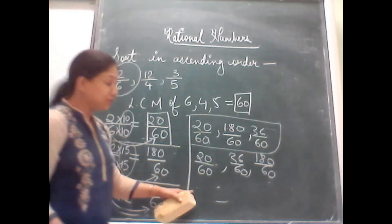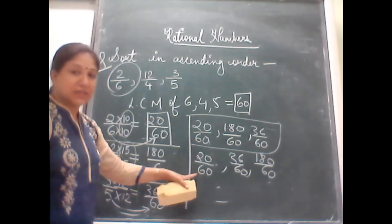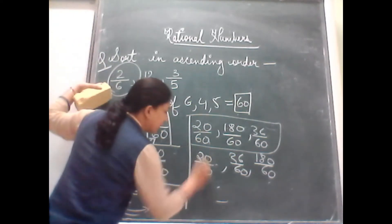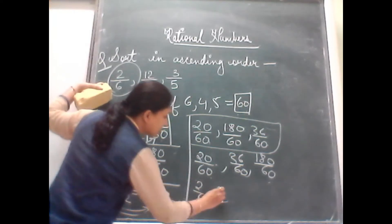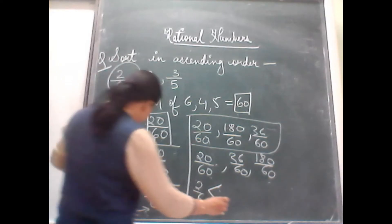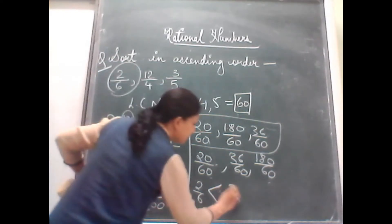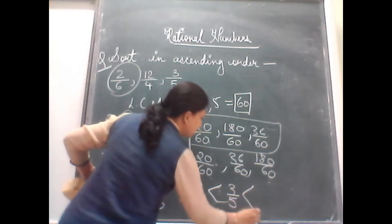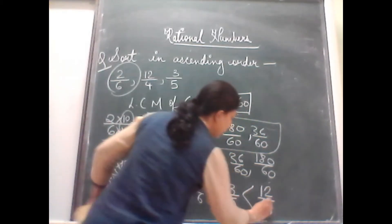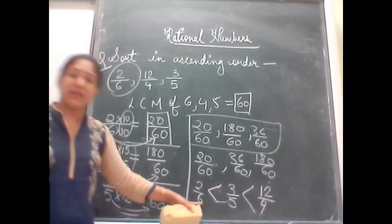Then we have 36 upon 60. And the last one is 180 upon 60. That's not all. So 20 by 60. The original fraction you see, it is representing which one? 20 by 60 means 2 by 6. This is smaller than the next one was 3 by 5. And the last one is 12 by 4. So here we get the answer.